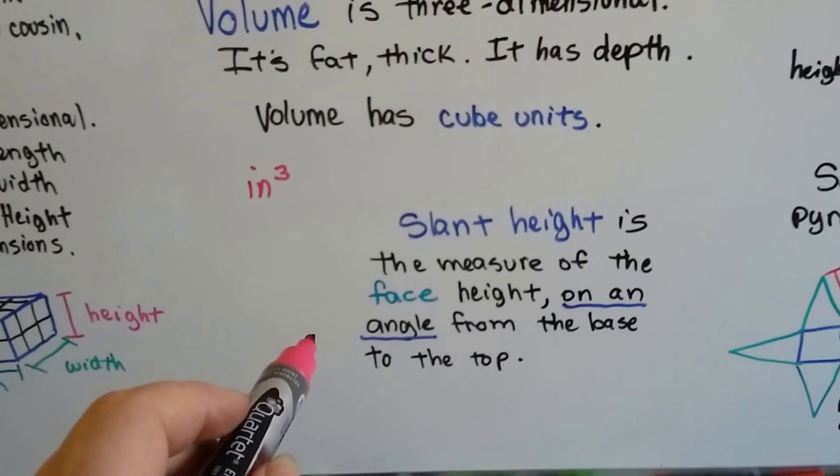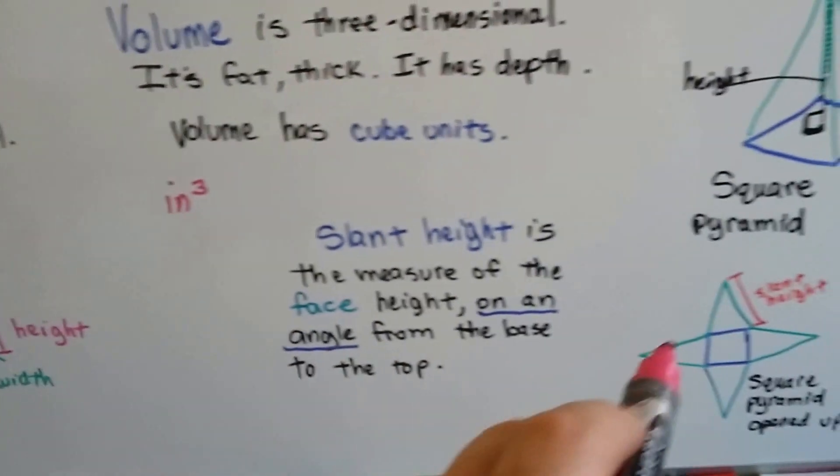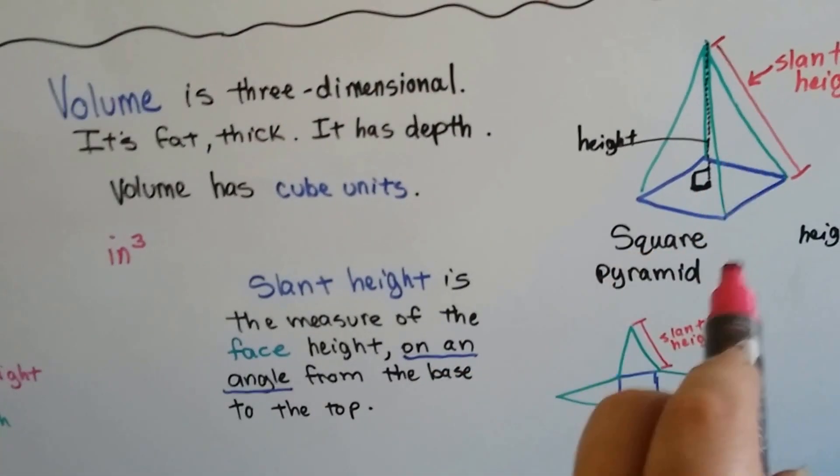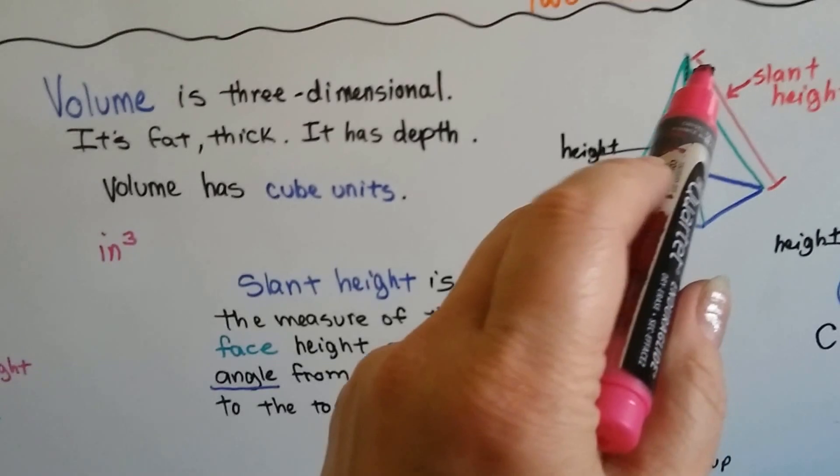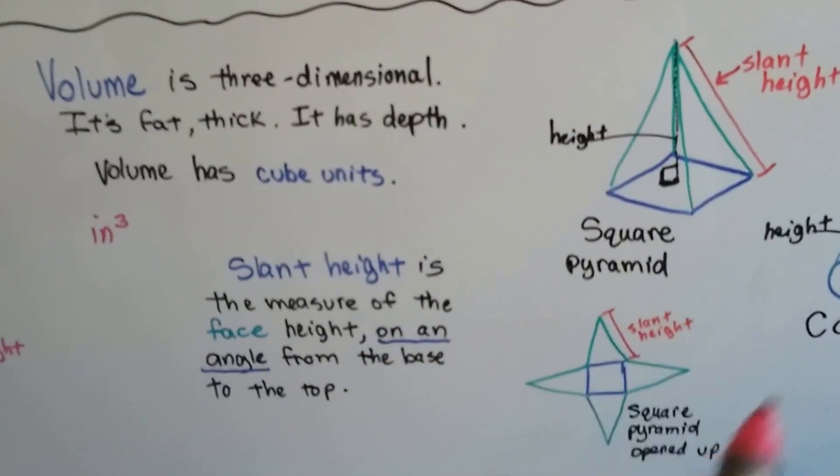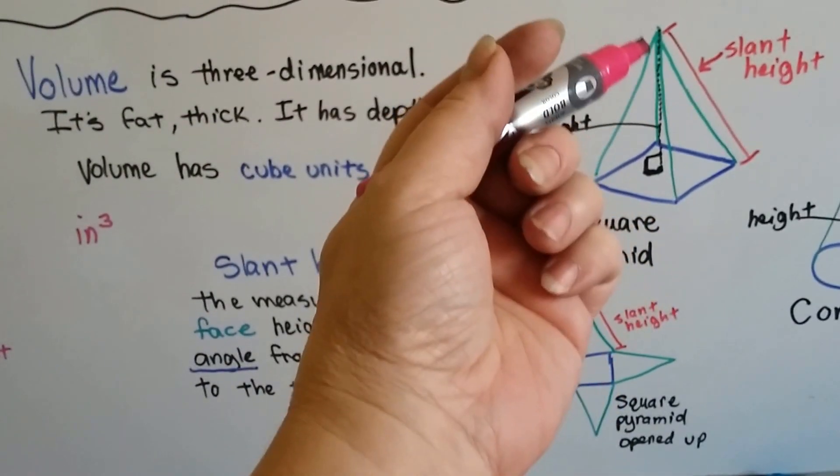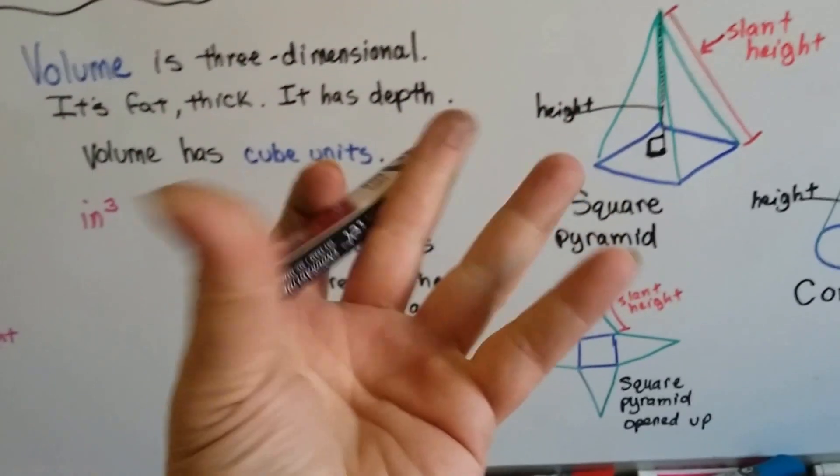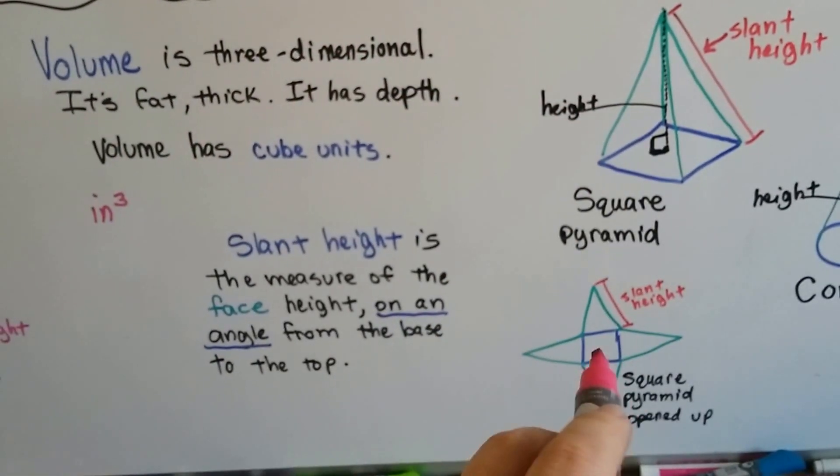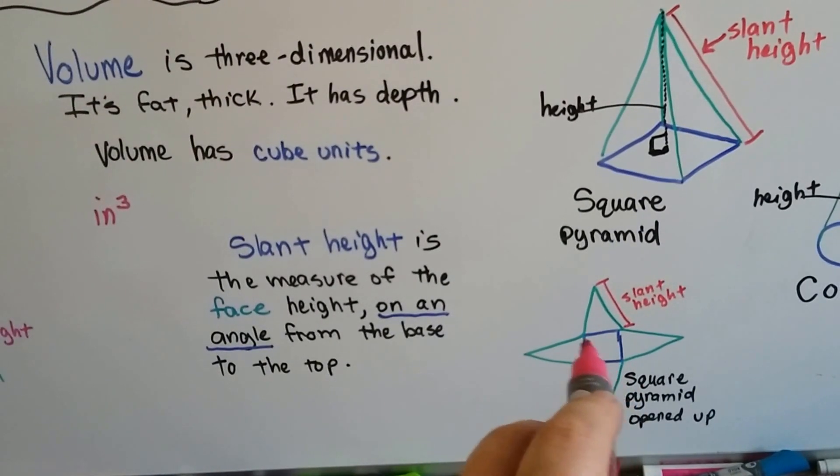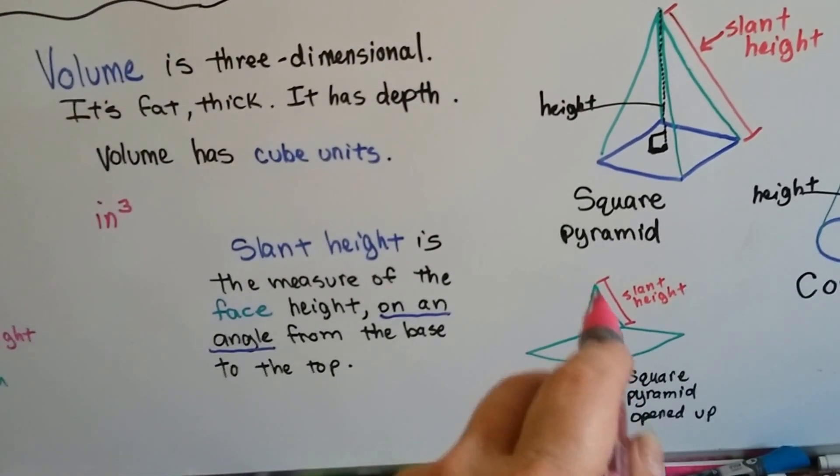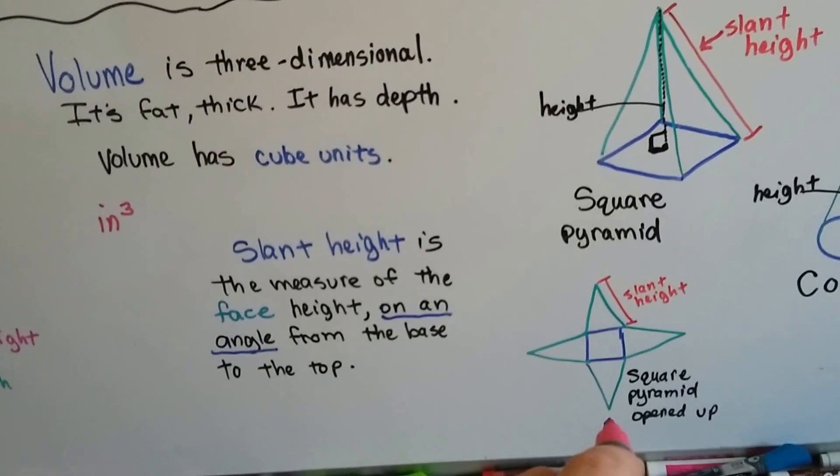The slant height is the measure of the face height. Like on this square pyramid, it's the face height along here. This is what it would look like opened up. If you took this and opened it up right here at the apex and opened it up like that, it would look like this. And here's the base. And then here's the walls, the faces, the sides laid out.